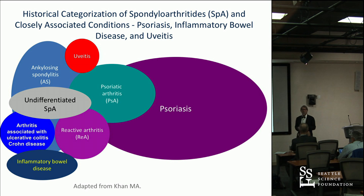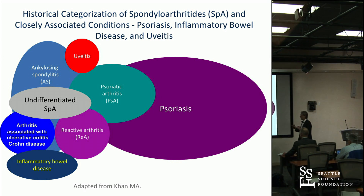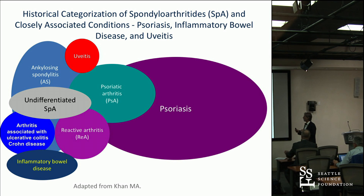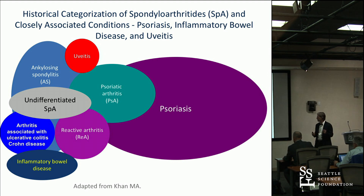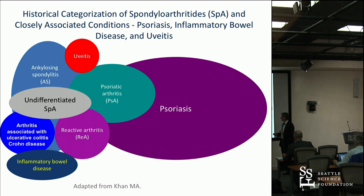This is an older view of the collection of disease states within the spondyloarthritis realm, with ankylosing spondylitis being the prototype, but then a number of others, including psoriatic arthritis, psoriasis which is genetically linked, inflammatory bowel disease which is genetically linked, uveitis, et cetera. This is how we used to view this arena, and I'm going to show you how we're changing that concept over time.